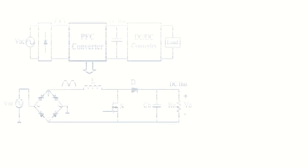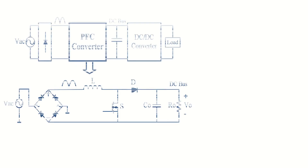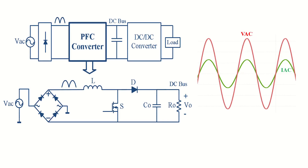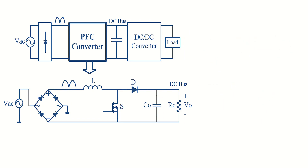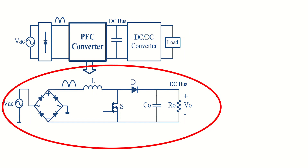Power factor correction circuits shape the input current of the power supply to be in synchronization with the AC input voltage, in order to maximize the real power drawn from the AC supply. In a perfect PFC circuit, the input current is in phase with the input voltage, without any input current harmonics. Although active PFC can be achieved in several ways, the boost converter is the most popular topology used in PFC applications.